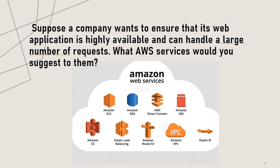Next question: suppose a company wants to ensure that its web application is highly available and can handle a large number of requests. What AWS services would you suggest? Use Amazon Elastic Load Balancer to distribute the incoming traffic across multiple instances of the web application, and Amazon EC2 Auto Scaling to automatically adjust the number of instances based on incoming traffic.